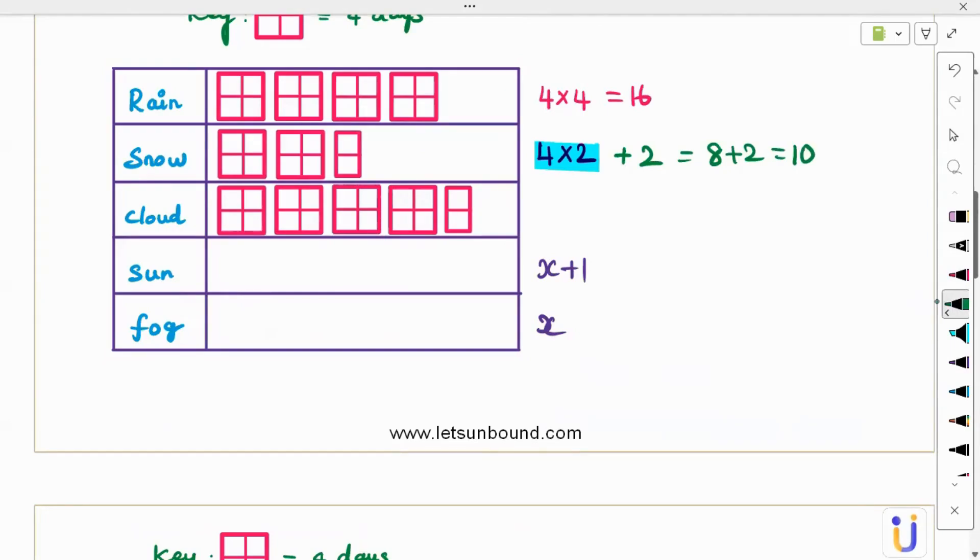And then cloud. Three, four full squares and then half of it. So four times four, because the key is also four, the number of times the picture appears also four. Four times four plus two, which is 16 plus 2, which is 18. Now for rain, snow and cloud we know the exact number, but for sun and fog we have the variables.